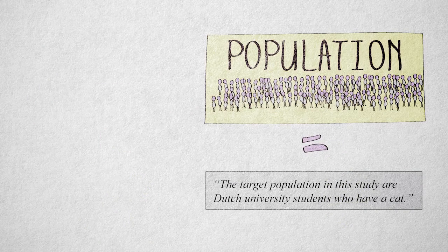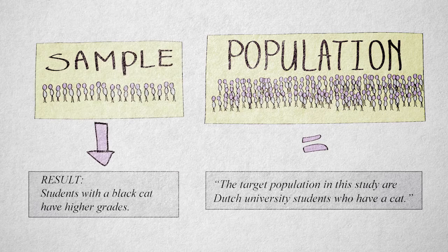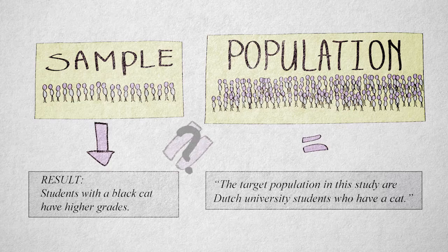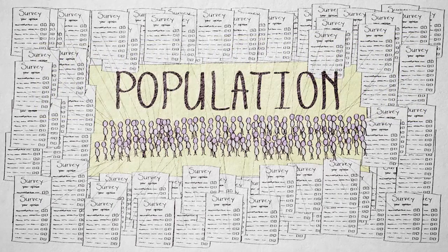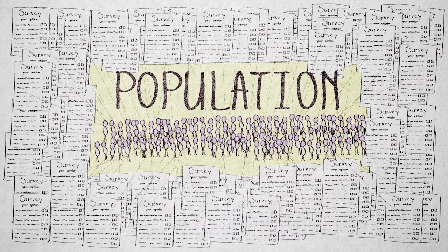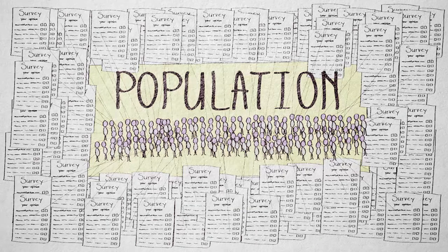Let's assume for a minute that the target population for a hypothesis is clearly defined. How can we determine if the results generalize to this entire population? Well, if we measure the entire population, then we're automatically sure that the results hold for the entire population. Everybody was measured.